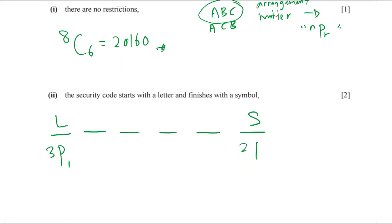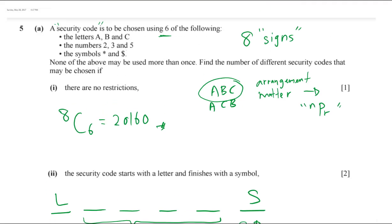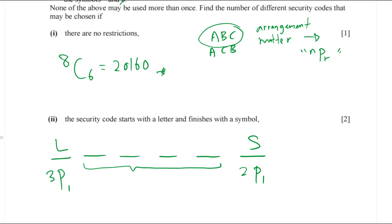After choosing one letter and one symbol, I need to fill the four middle positions. With those two characters used, I have six characters remaining. So I choose four from the remaining six to fill the four middle positions: 6P4. Then I multiply all three parts together.